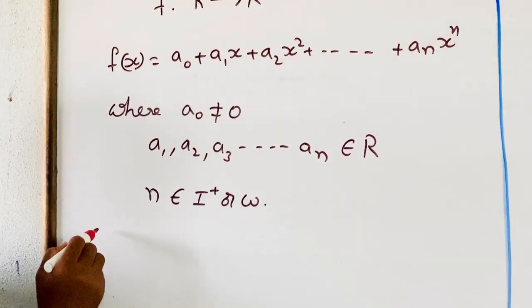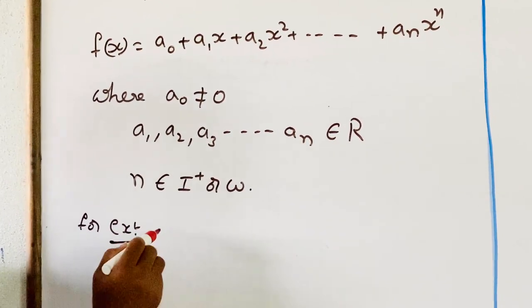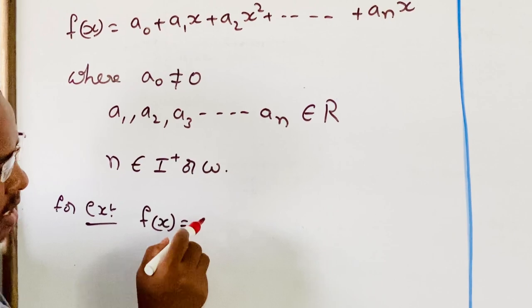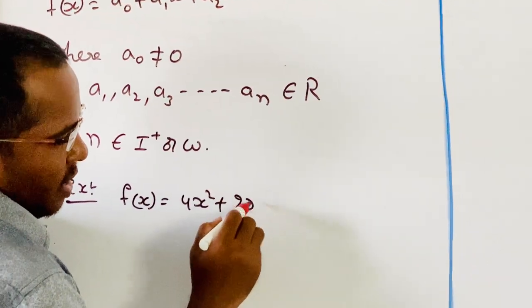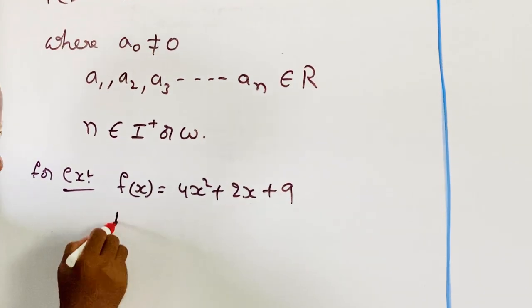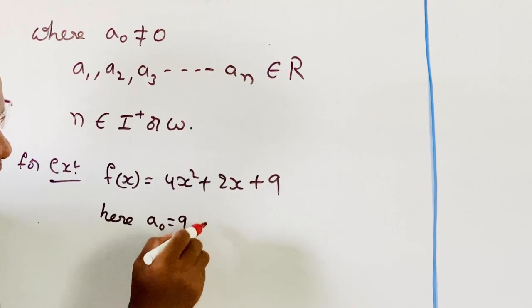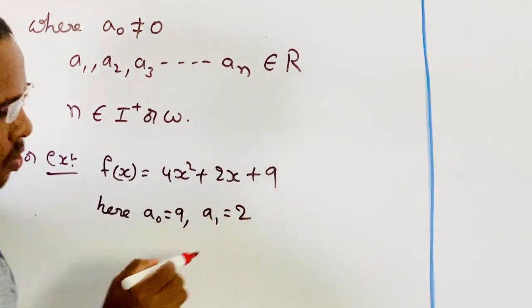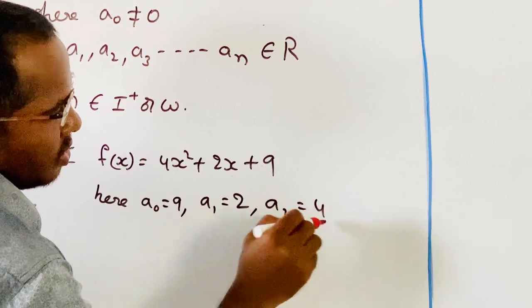For example, f of x is equal to 4x squared plus 2x plus 9. Here, a0 is equal to 9, a1 is equal to 2, a2 is equal to 4.